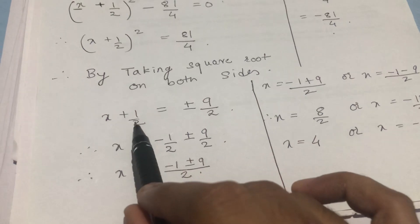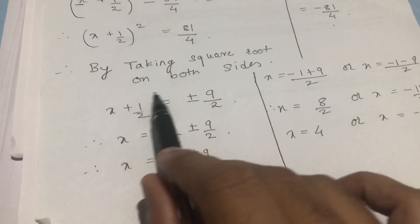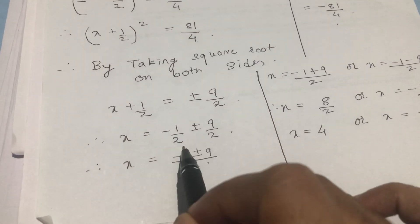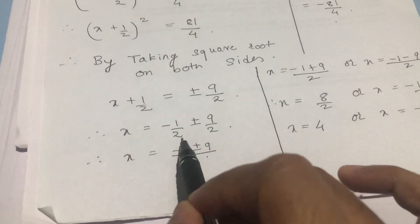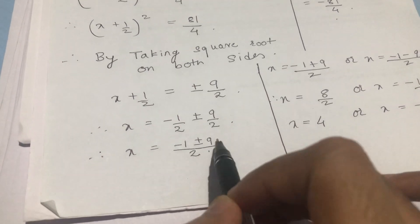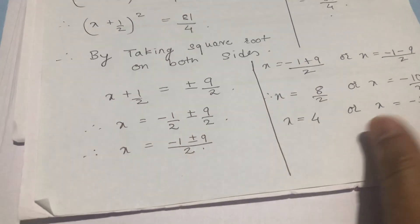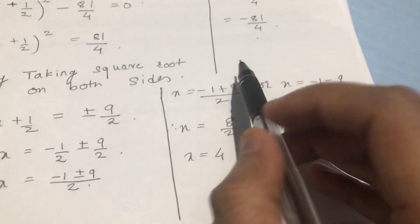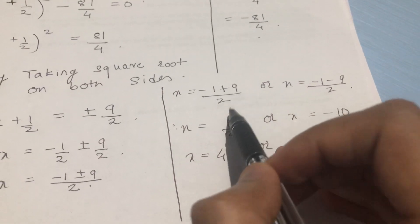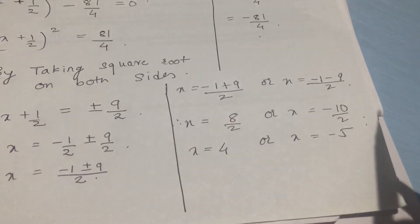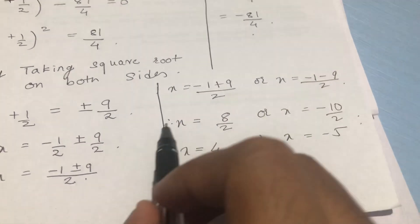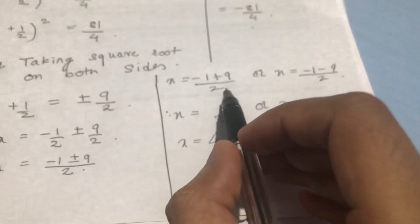Now take 1/2 to the other side, so you get x = -1/2 ± 9/2. Since the denominators are the same, it becomes (-1 ± 9)/2. Writing it properly: x = (-1 + 9)/2 or x = (-1 - 9)/2. Solving these gives the two answers. Is that clear? Let us move to the next question.